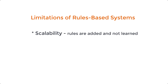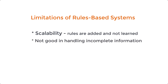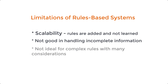Second, rule-based systems cannot handle incomplete information very well — meaning data that does not have an associated rule will simply be ignored. Third, if a rule has many different considerations and variables that come into play, it will be very hard to write a single rule that captures everything. Rule-based systems simply cannot handle the complexities and uncertainties of the world.